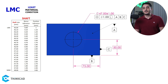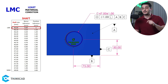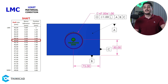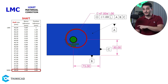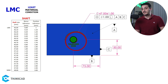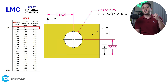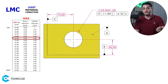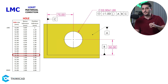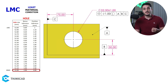Starting with LMC size, which has the smallest position tolerance, as our size gets larger we gain bonus tolerance and our position tolerance zone gets larger by the same amount. At MMC we have our largest tolerance zone. For our hole example, we have LMC of 53 mm on top and MMC of 51 mm on the bottom. There is no bonus tolerance at LMC, which makes our position tolerance the original 1 mm. As we move towards MMC of 51 mm, we gain bonus tolerance the amount of departure from LMC. At MMC, we get 2 mm of bonus tolerance, making our position tolerance 3 mm.